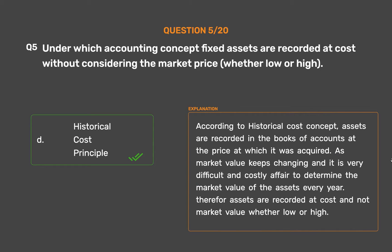According to the Historical Cost Concept, assets are recorded in the books of accounts at the price at which they were acquired. As market value keeps changing and it is very difficult and costly to determine the market value of assets every year, therefore assets are recorded at cost and not market value, whether low or high.